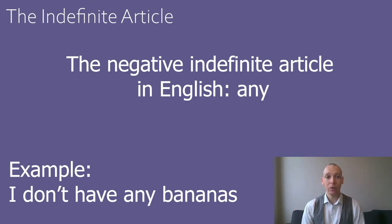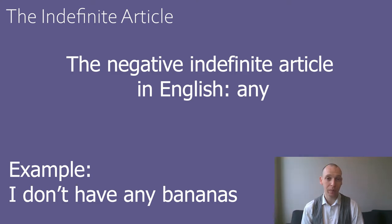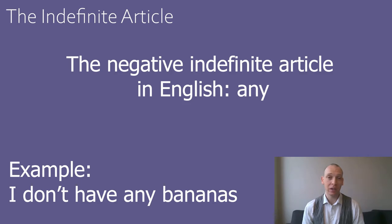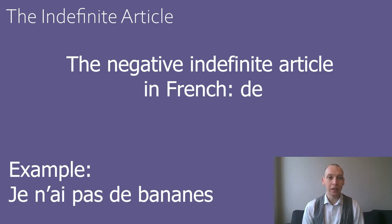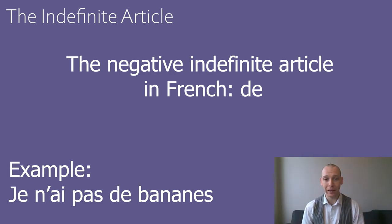In the negative, we have different words for the indefinite article in English and in French. In English, the word 'any' is used with a negative verb phrase as the indefinite article. For example, 'I don't have any bananas.' In French, the negative article is 'de'. To use the same example, 'I don't have any bananas' would be 'Je n'ai pas de bananes'.